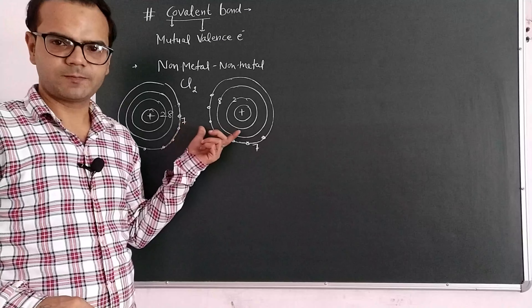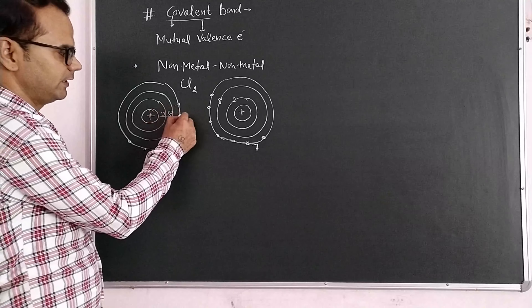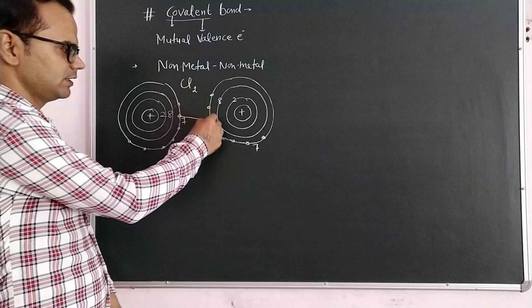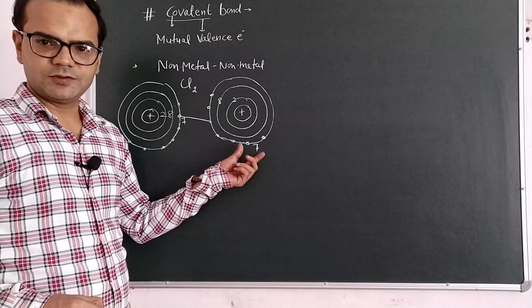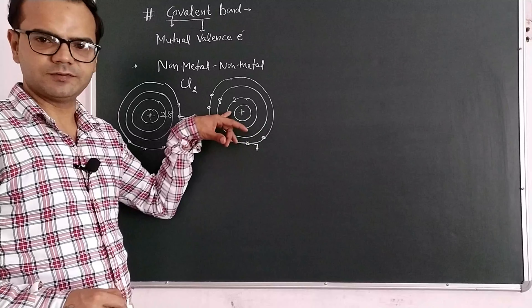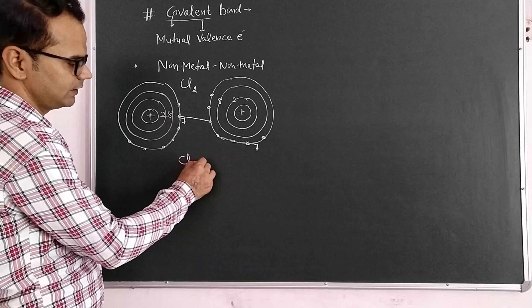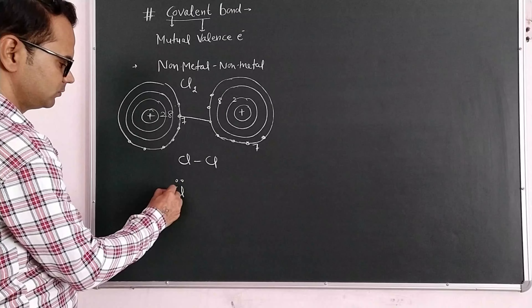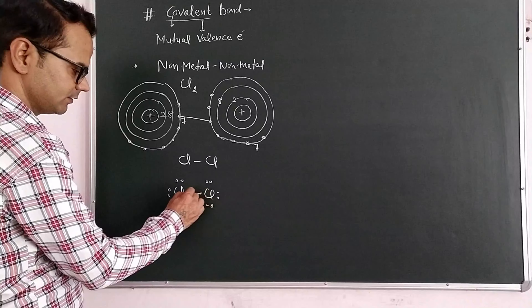Here we have two chlorine atoms and both are non-metal elements. If they each share one electron — one from this chlorine and one from the other — then before sharing each chlorine had seven electrons. By sharing, that electron is counted in its valence shell, giving eight electrons. This results in the completion of the octet, resulting in the formation of a chlorine molecule. If this electron pair is shared, this is a covalent bond.